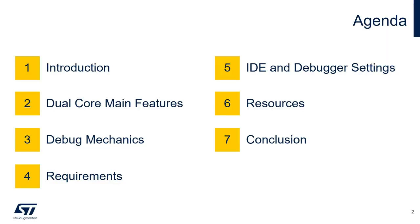Let's begin with the agenda. I'll introduce the basics of dual core and how it can be useful in microcontroller applications. Next, I'll review the main features of our dual core system as well as the debug mechanics that make it all possible. Then I'll explain the specific requirements for debugging STM32H7 dual core microcontrollers and the specific debugger settings needed for STM32Cube IDE. Finally, we'll conclude the video, give you some resources, and you'll have all the tools necessary to start your own dual core project.